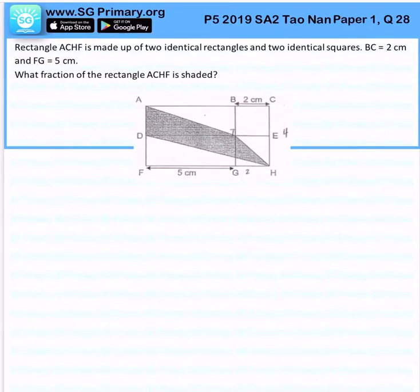Now we have a rectangle ACHF which is made up of two rectangles and two identical squares. BC is 2cm and FG is 5cm. Let us just write down the values over here.